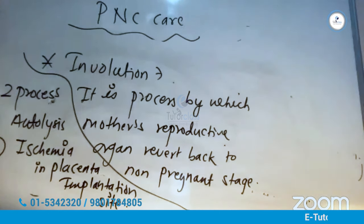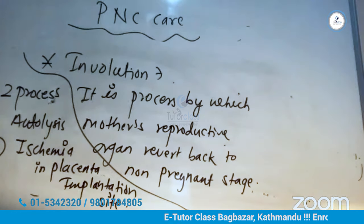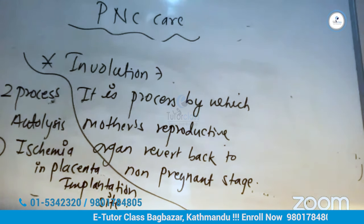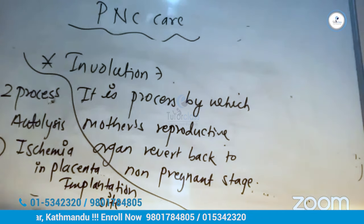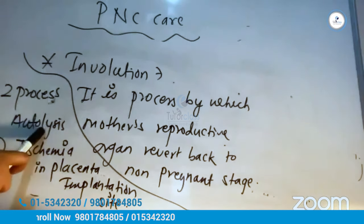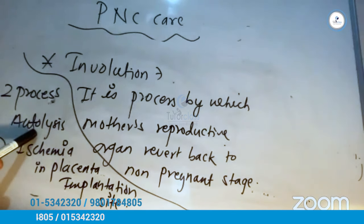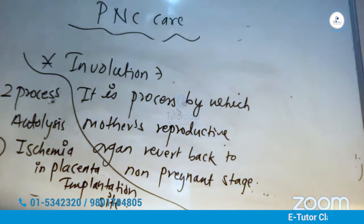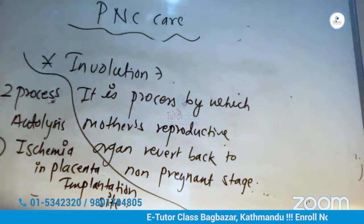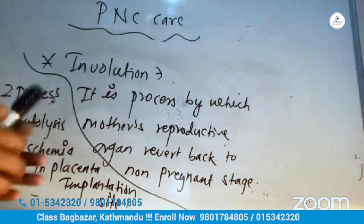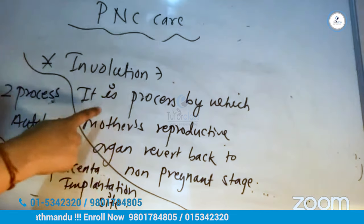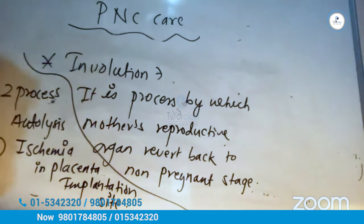During pregnancy, uterine cells undergo hypertrophy — increase in cell size — and hyperplasia — increase in cell number. After delivery, these extra cells are broken down through autolysis. At the placenta implantation site, which occupies about 30% of the uterus at term, blood flow is reduced and the tissue heals. This entire process is called involution.